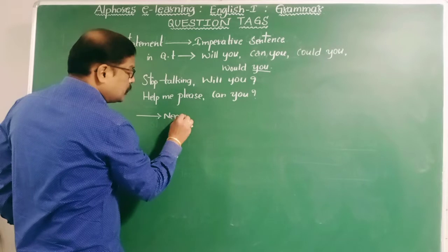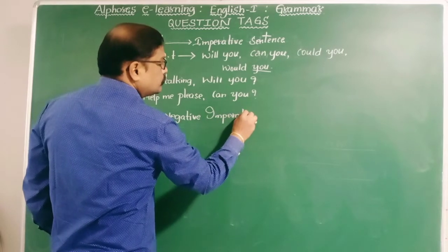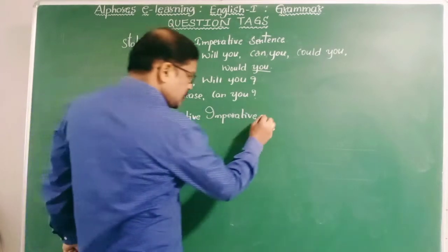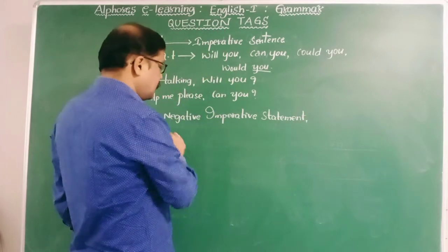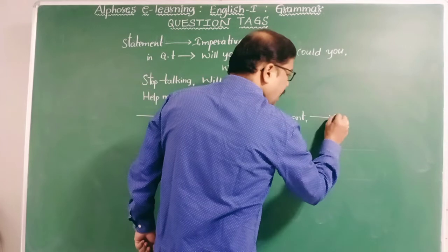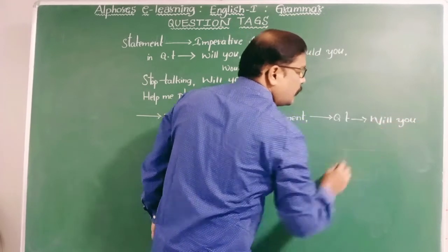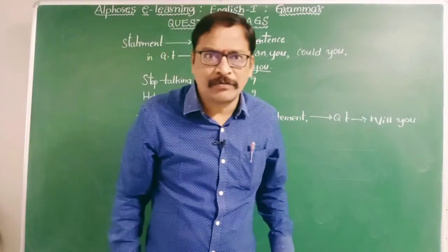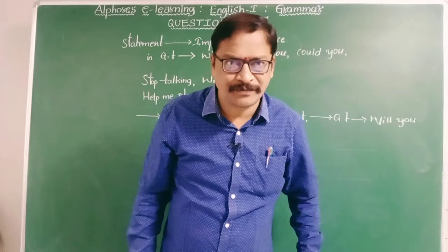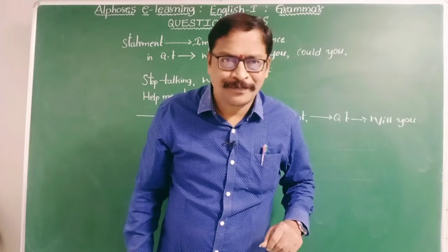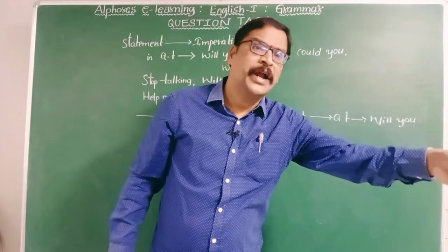For a negative imperative statement, the question tag is also will you. Don't talk, will you? Don't make a noise, will you? When the expression is 'don't talk,' if you write 'do you' that will be wrong. So for both imperative and negative imperative, will you is used.